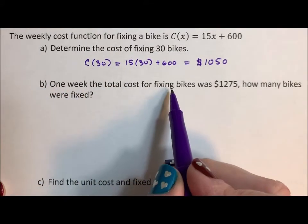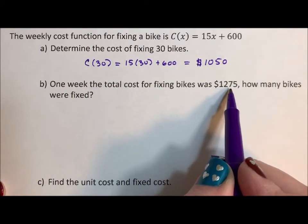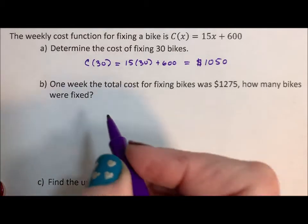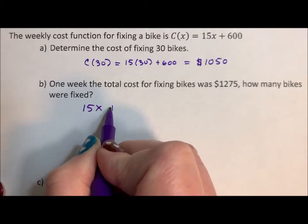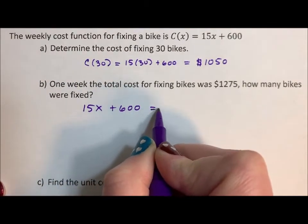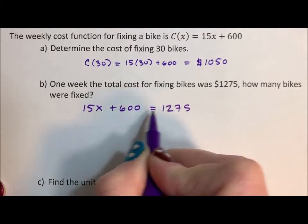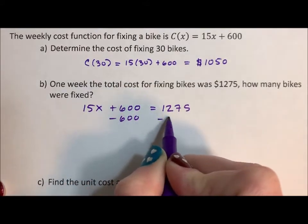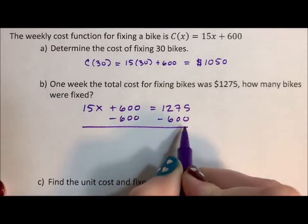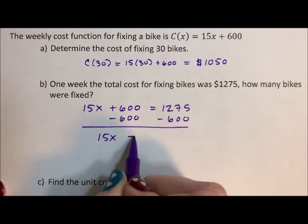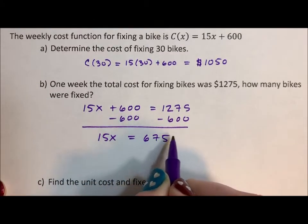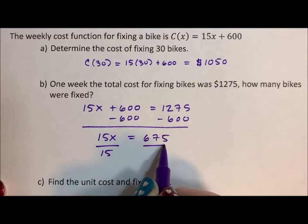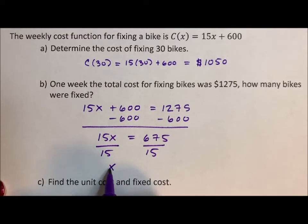One week, the total cost for fixing bikes was $1,275. How many bikes were fixed? So 15x + 600 = 1,275. We subtract the 600 from both sides. 15x = 675. Divide both sides by 15, and x will be 45 bikes.